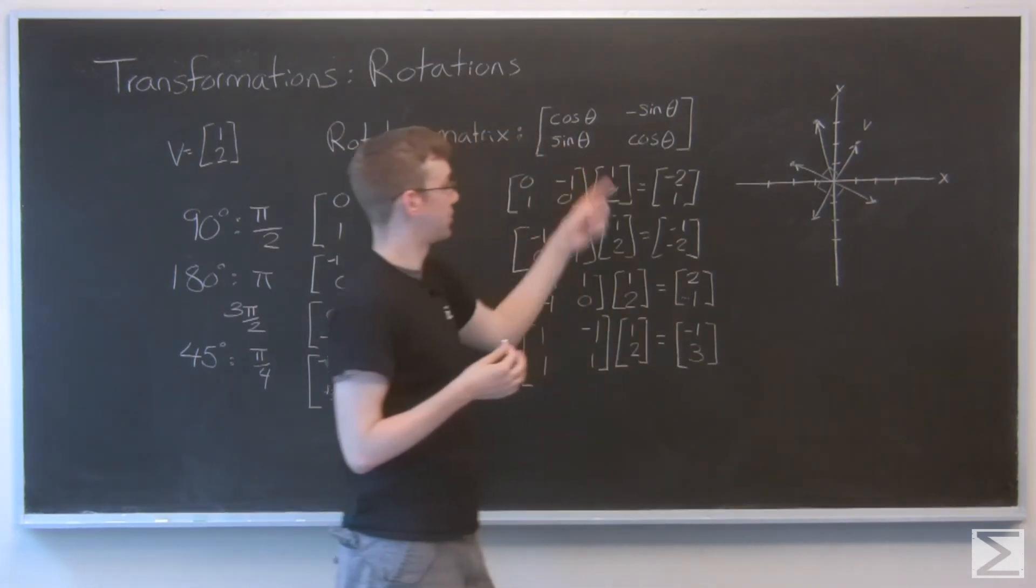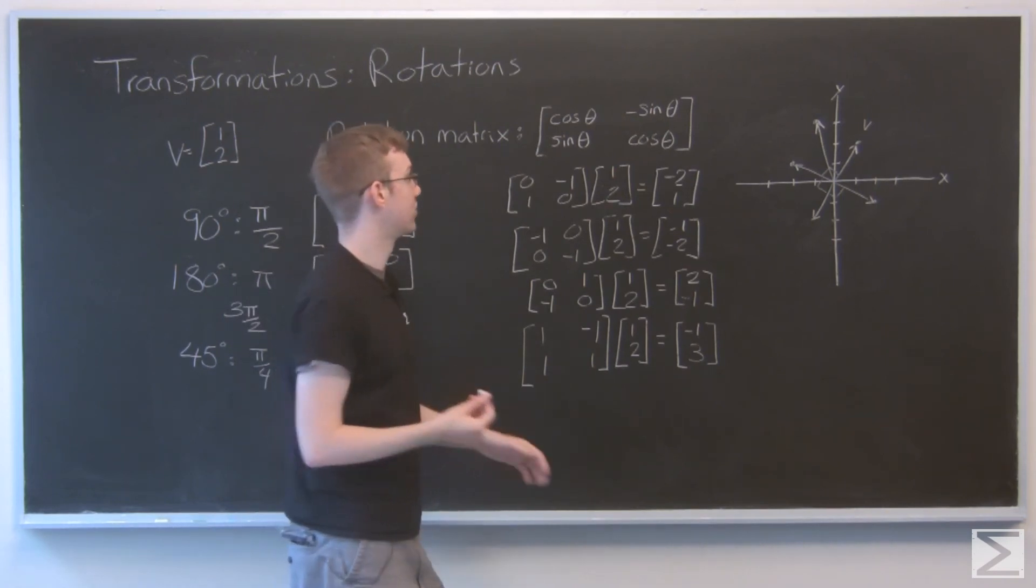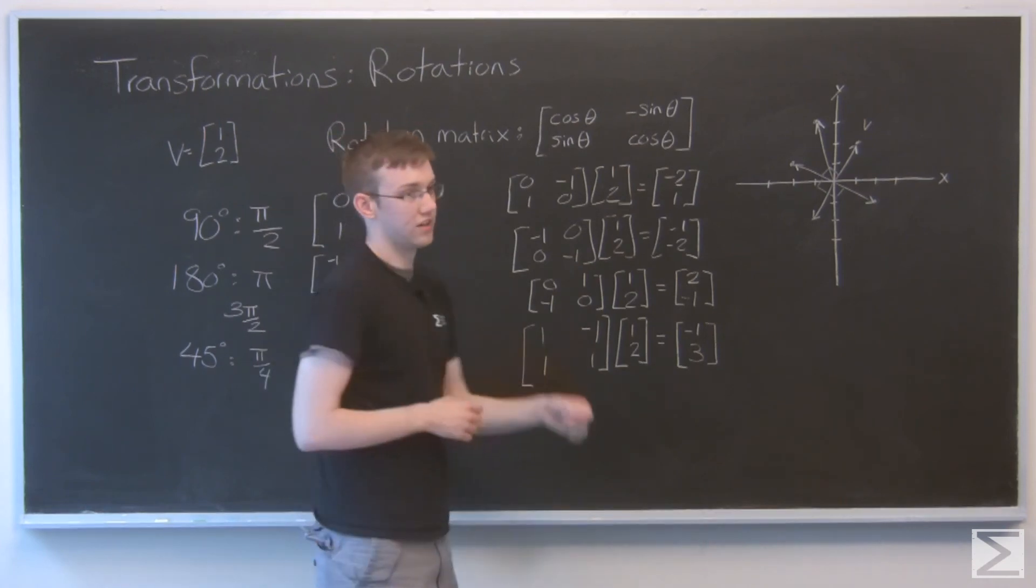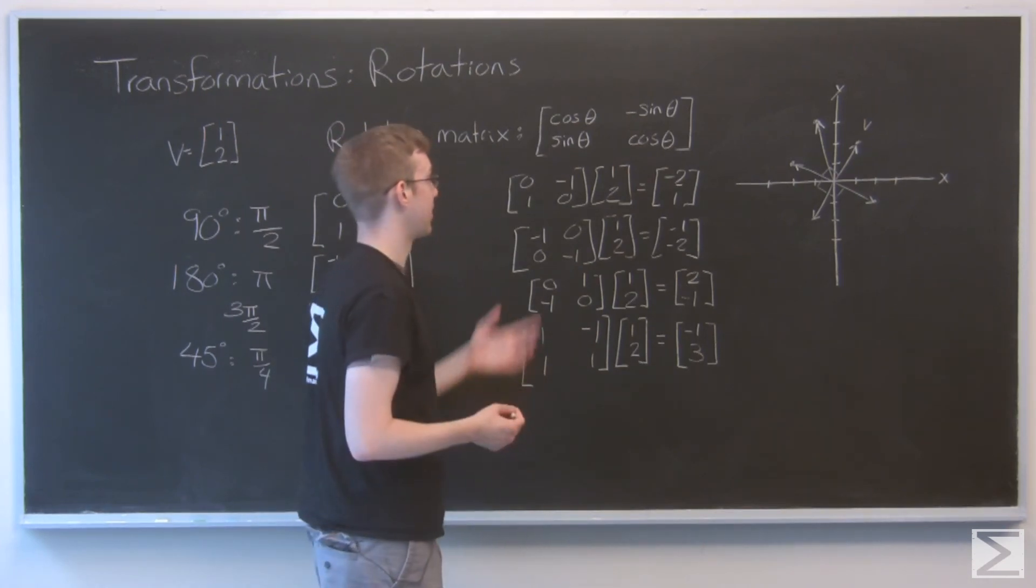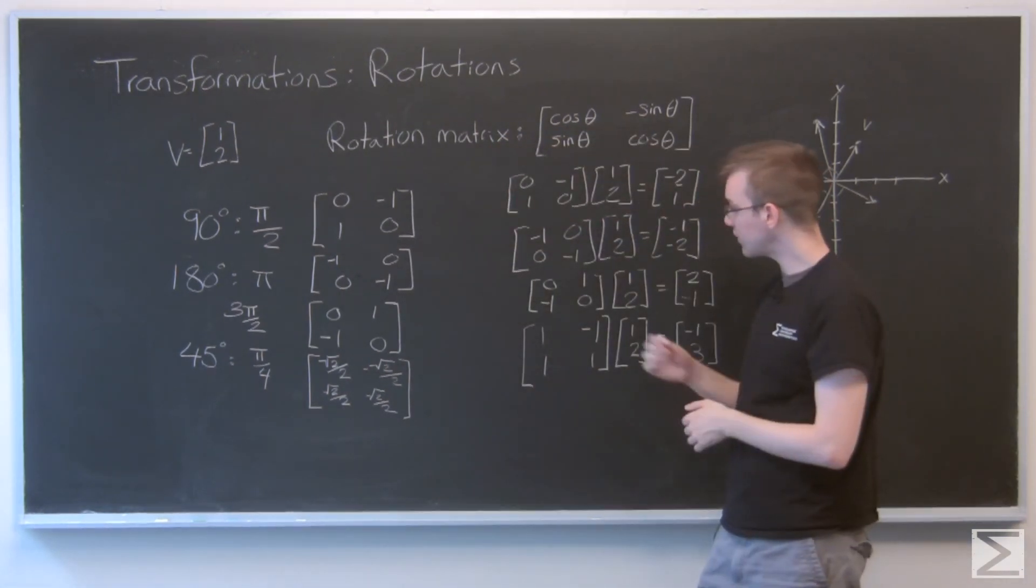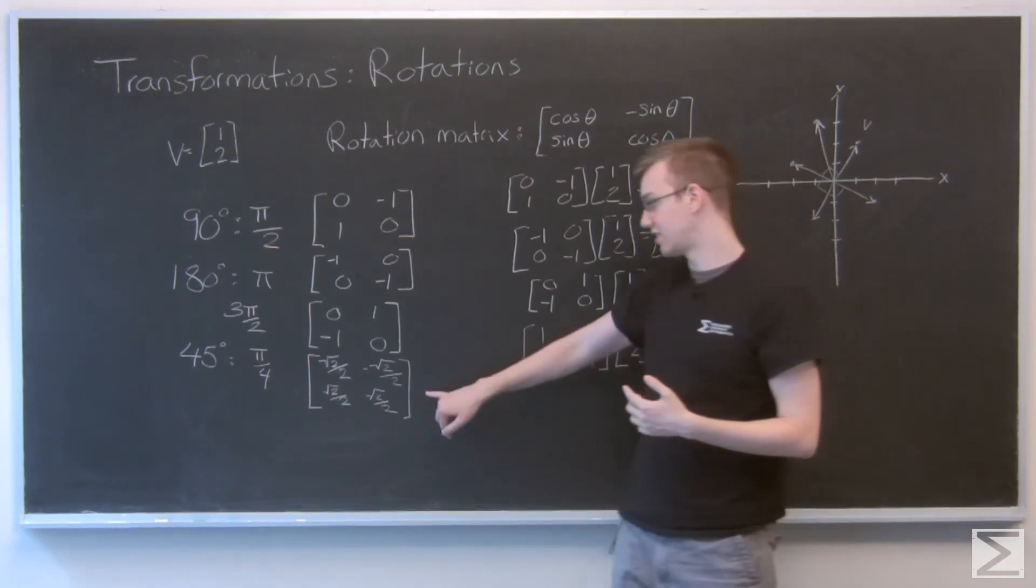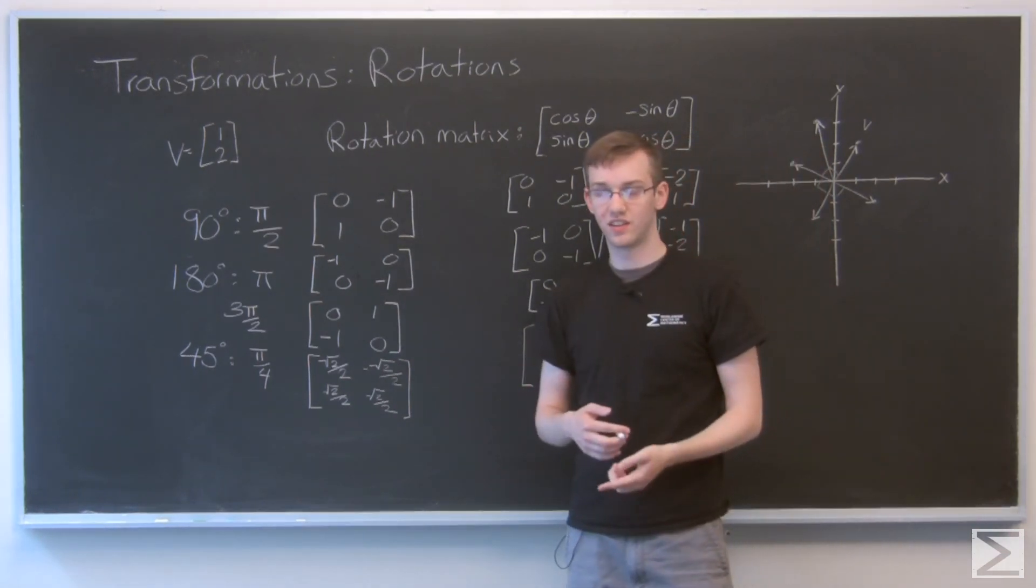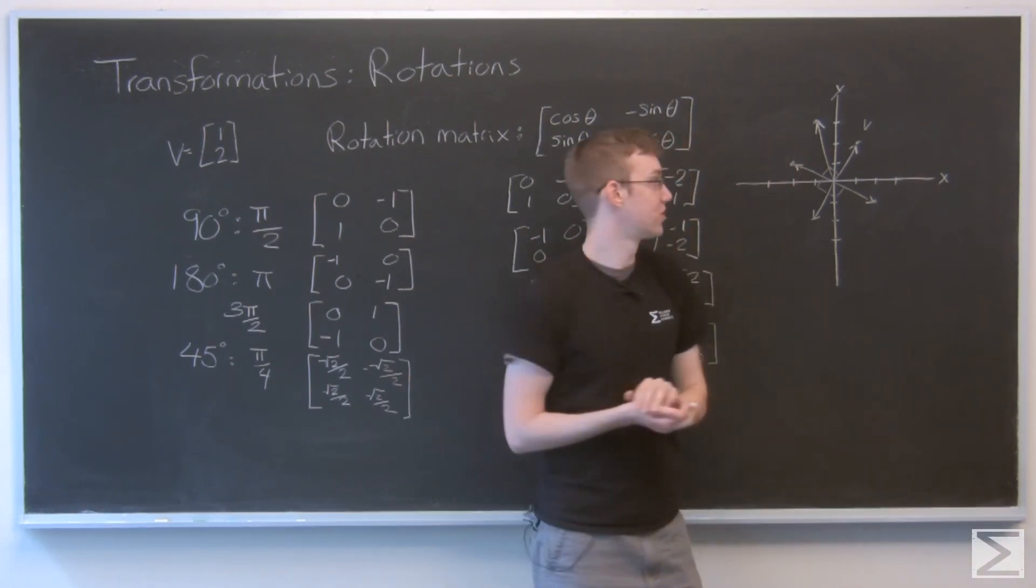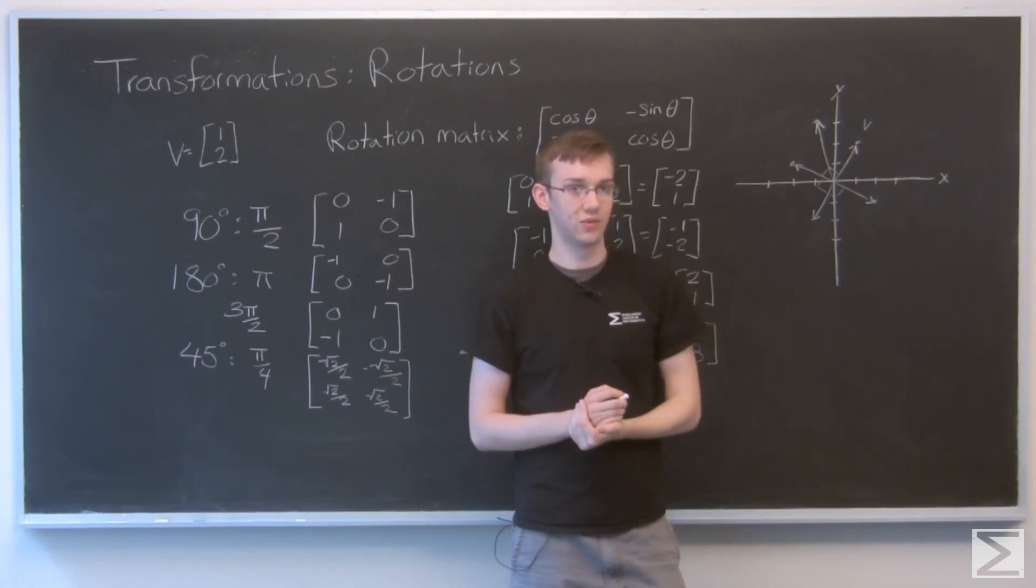So with this matrix, you can do any angle you can possibly think of. You can do 28 degrees or 500 degrees. It doesn't really matter. This is just your catch-all for rotating. And you'll notice you can also scale things, as I did here, by combining a scaling matrix with such a rotation matrix. So now you can not only get an angle pointing in any direction you want, you can get any length you want as well.